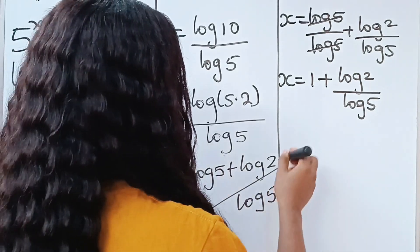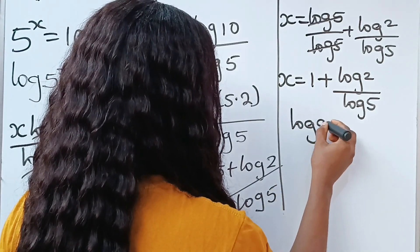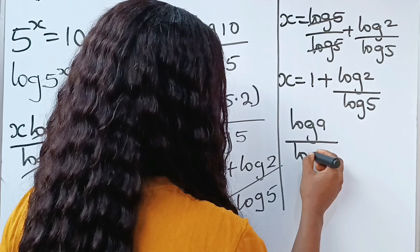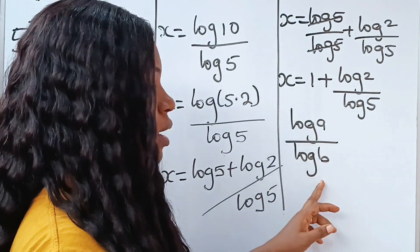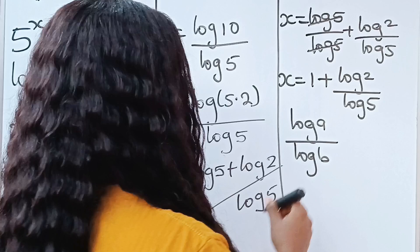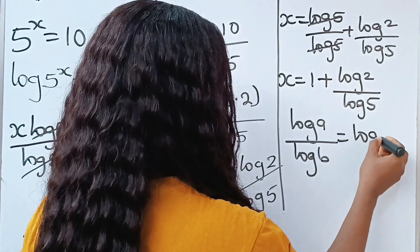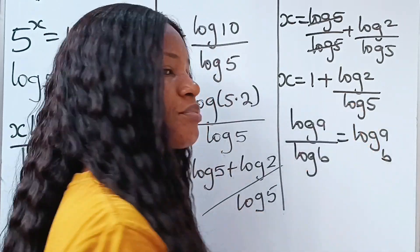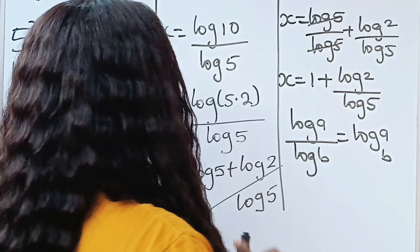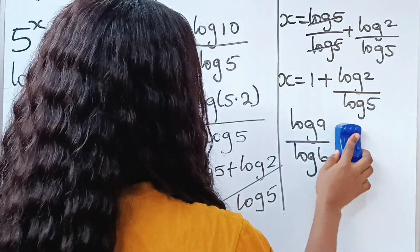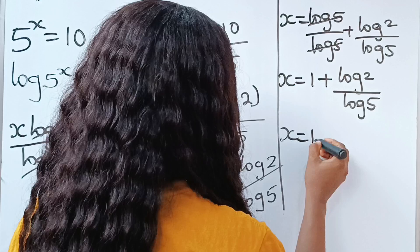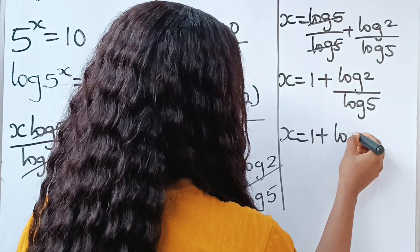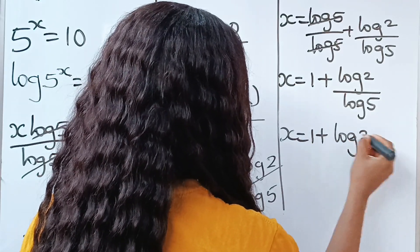Now, note that when you have log a divided by log b, once they are sharing the same base, this simply means log a base b. So we can simplify our solution for that as x is equal to 1 plus log 2 base 5.